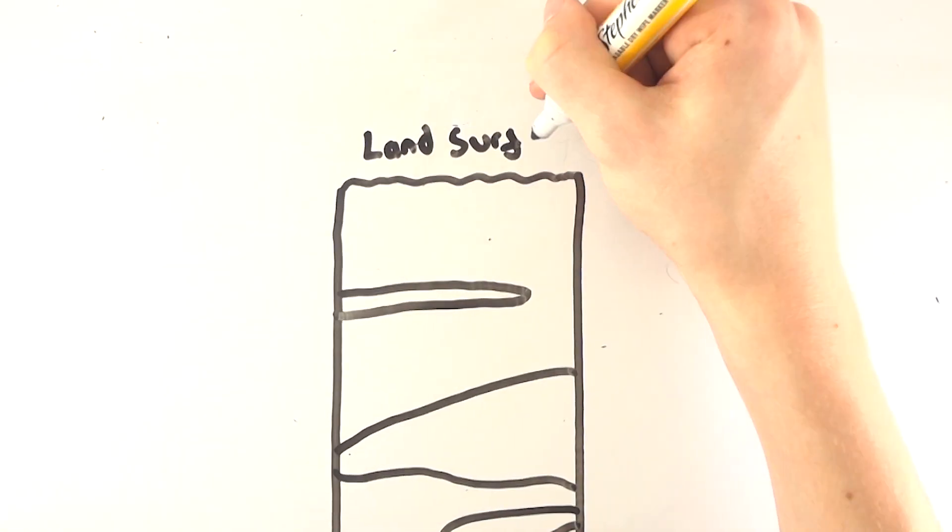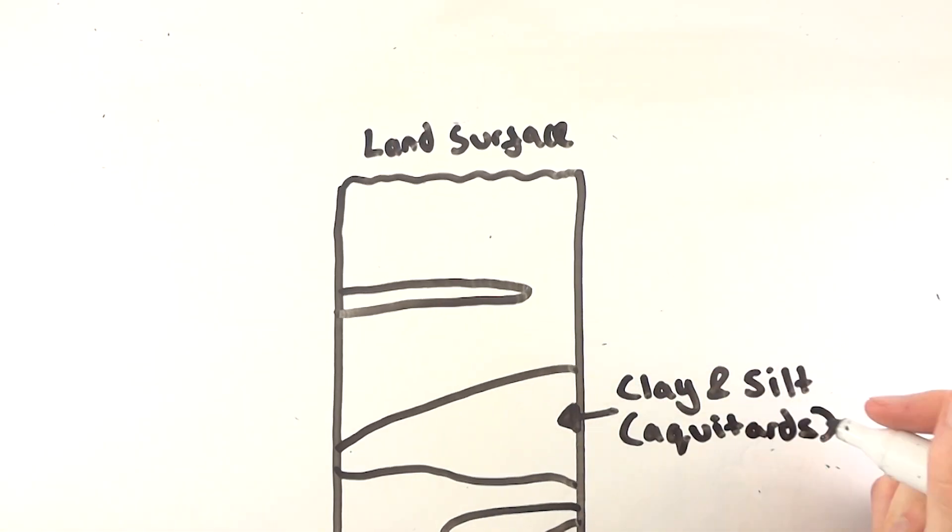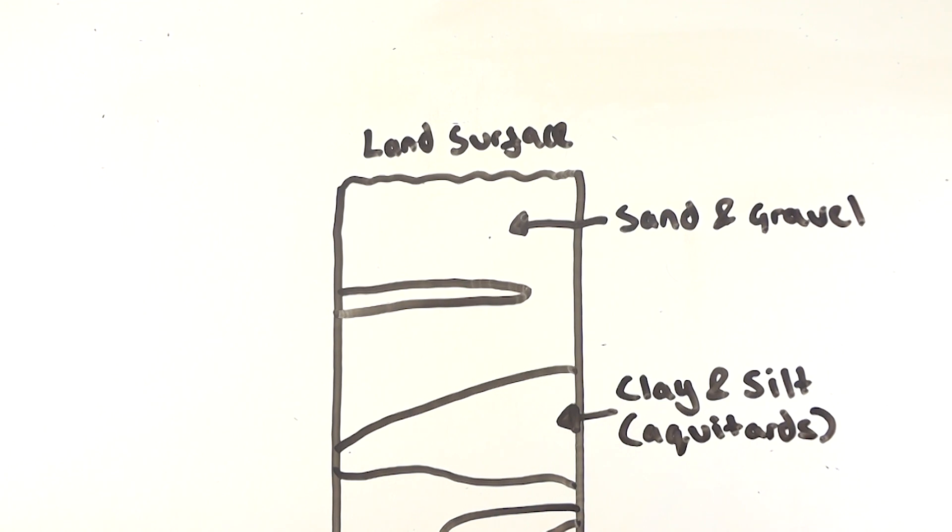So what is land subsidence, and why is it causing cities to sink? Aquitards within aquifer systems are the main causation of land subsidence from groundwater pumping.